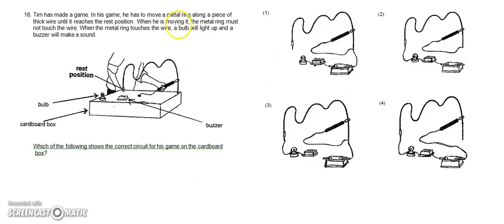So when he is moving it, the metal ring must not touch the wire. What happens when the metal ring touches the wire? A bulb will light up and a buzzer will make a sound. So this bulb here will light up and the buzzer will make a sound.